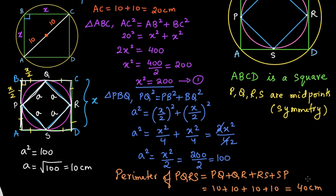In fact, figure PQRS is a square — the proof is left as an exercise. The perimeter of PQRS is 40 centimeters. This question appeared in the CAT exam.